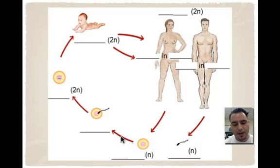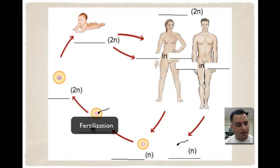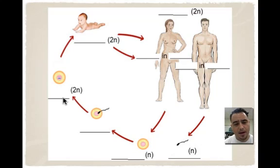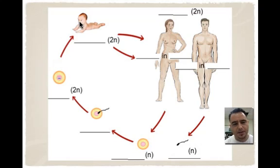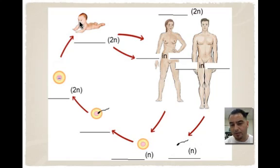Then the sperm and the egg unite in the process of fertilization, and you bring back that diploid number — 46. This is the zygote, the very first cell — I call it cell number one of your entire body. That cell then goes through mitosis; it divides and divides until you have a baby. Those cells start to differentiate but still have the same DNA — they turn into different cells because certain genes turn on, which is called gene expression.